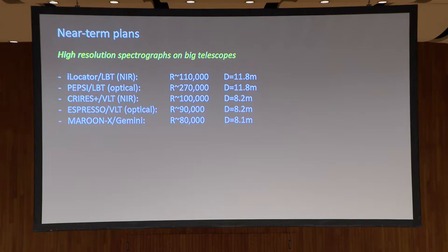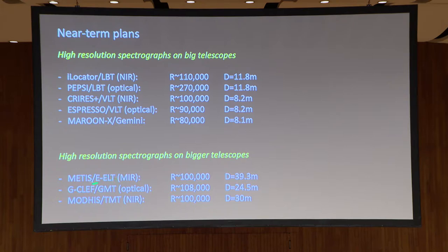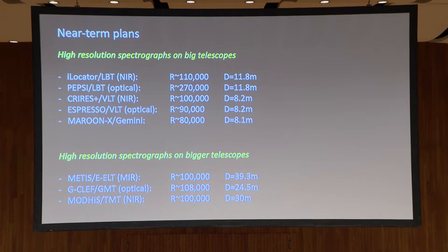The near-term plans for high resolution spectrographs: at the moment we have instruments with these exoplanet science cases, most of them built and commissioning or about to be commissioned. In the future, we have the next generation of ELTs, each with a high resolution spectrograph. Interestingly, the European Extremely Large Telescope has a mid-infrared one, the GMT has an optical one, and the TMT has a near-infrared one — each going in a different direction with their science case. They'll be able to do really exquisite things with high resolution spectrographs on exoplanet atmospheres.